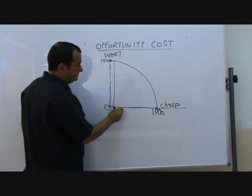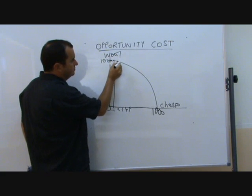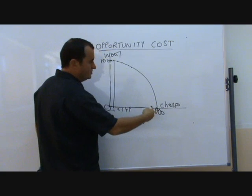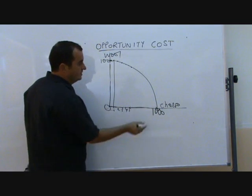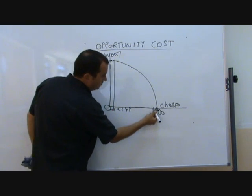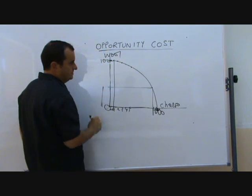But as they continue to do this and move to points along here, the opportunity cost of having another unit of cheese starts to grow. So at the end, to move the same distance across as here—to have that one extra unit of cheese—now requires giving up a huge amount of wool.